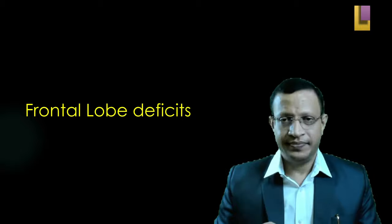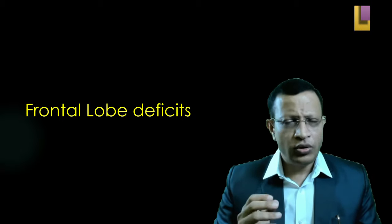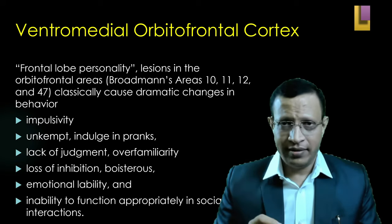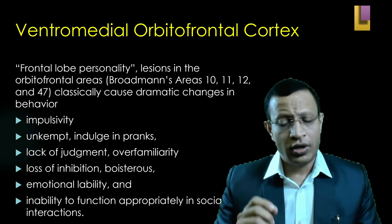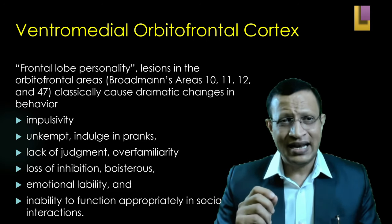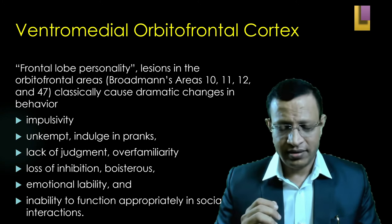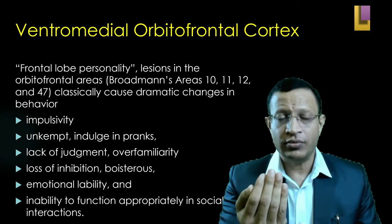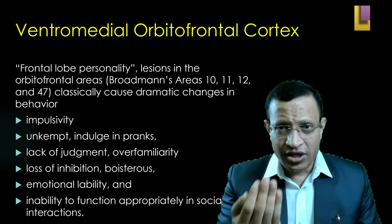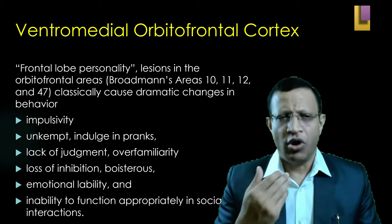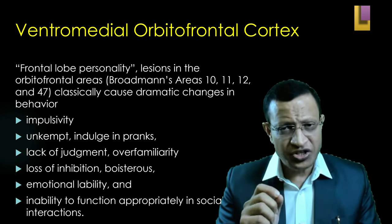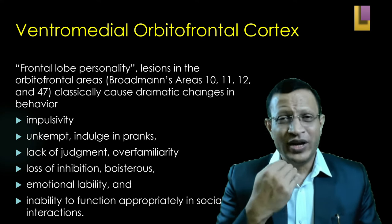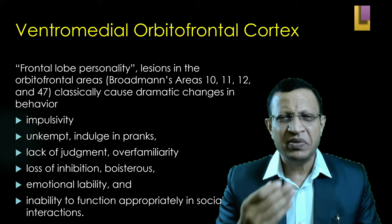If there is a lesion in the frontal lobe, how does the patient present? The first and most common syndrome is the ventromedial orbitofrontal cortex syndrome, also called frontal lobe personality, in Brodmann's areas 10, 11, 12, and 47. The patient will be impulsive, unkempt, indulge in pranks, show lack of judgment, over-familiarity, loss of inhibition, boisterous behavior, emotional lability, and inability to function appropriately in social situations. In orbitofrontal syndrome, the patient goes outward — very boisterous, restless, unkempt, and impulsive.